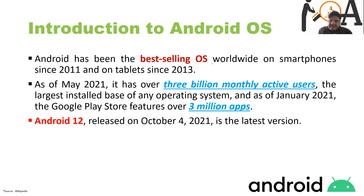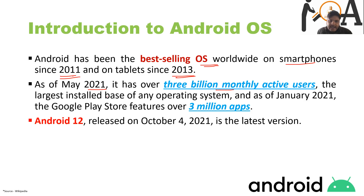Android has been the best-selling operating system worldwide on smartphones since 2011 and on tablets since 2013. As of May 2021, it has over 3 billion monthly active users — the largest installed base of any operating system. As of January 2021, the Google Play Store featured over 3 million apps, which equals 30 lakh apps.